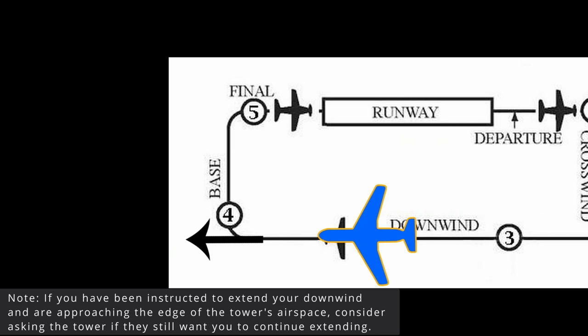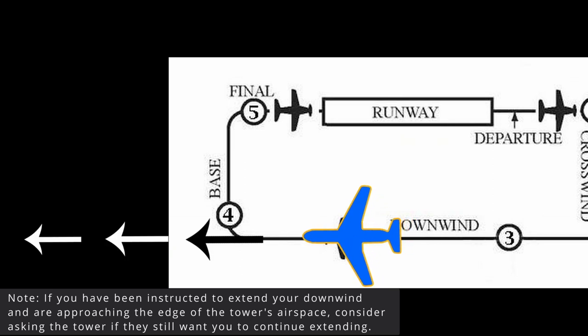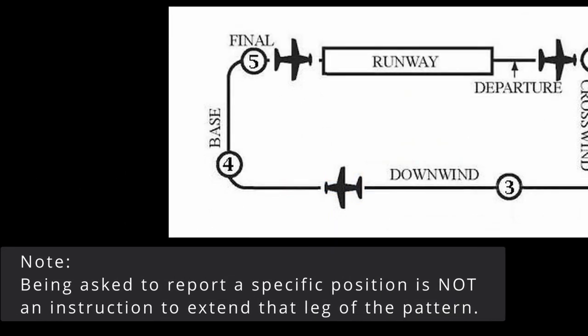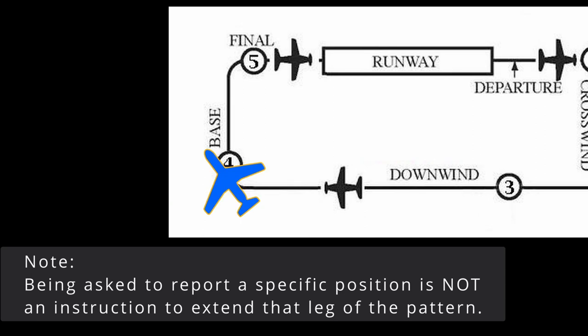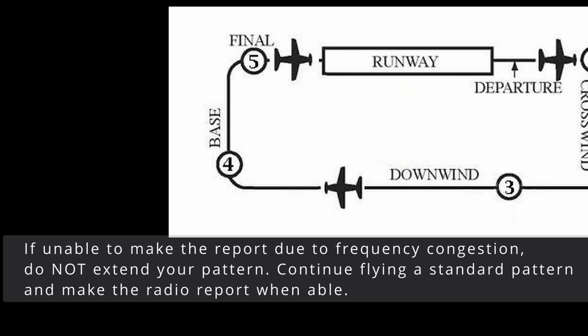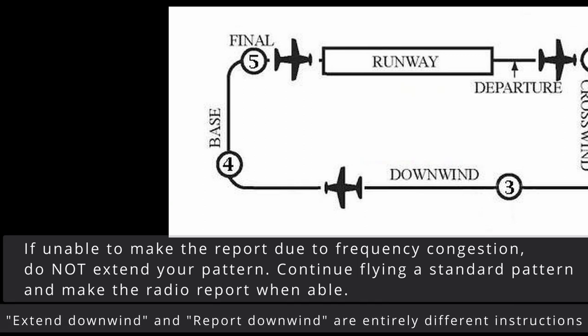For example, if the tower tells us to extend our downwind leg, we would maintain our speed and altitude until further advised. Additionally, the tower may ask you to report something such as a midfield downwind, abeam the numbers, turning base, etc. If told to report one of these points, just call up when you're about to reach that point. If you're unable to get a word in on the radio at your reporting point, make the report as soon as there's an opening. The controller will understand that the radio was too busy for you to make the call at the correct time.